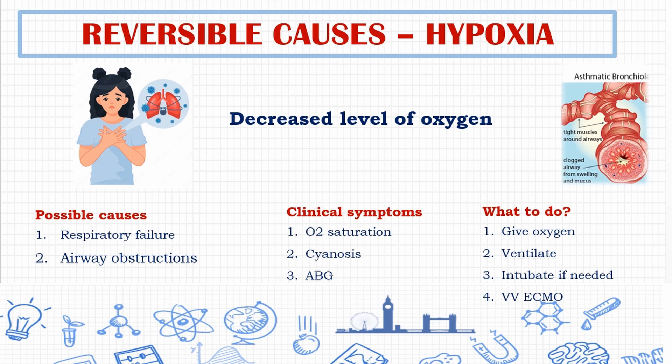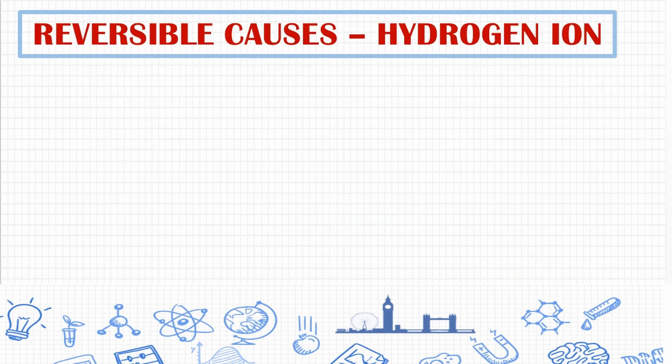In the case of hypoxia, start with oxygen, intubate and ventilate the patient. Sometimes VV ECMO — veno-venous extracorporeal membrane oxygenation — can be used.